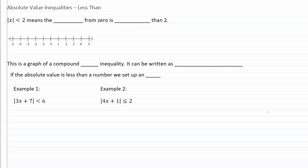Absolute value inequalities less than. The absolute value of x less than two means that the distance from zero is less than two.